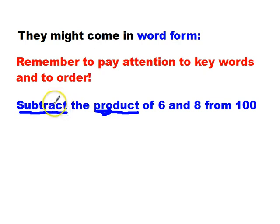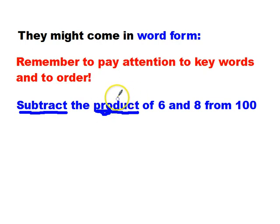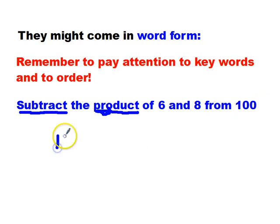When I subtract, it matters what order I do things in. It doesn't when I add, and it doesn't when I multiply, but it does if I subtract or divide. So I do need to pay attention to order. I'm going to subtract the product — so whatever I multiply, I'm subtracting it from 100. That means 100 take away the product of 6 and 8.